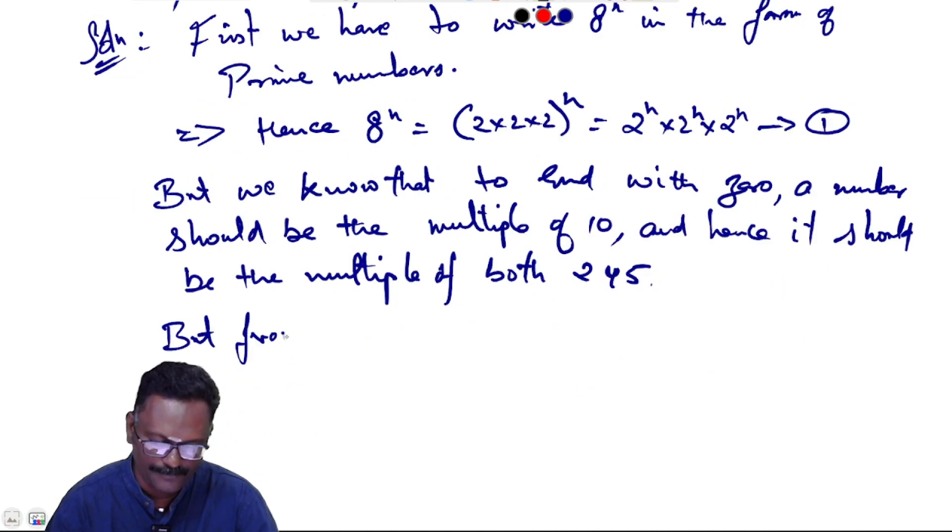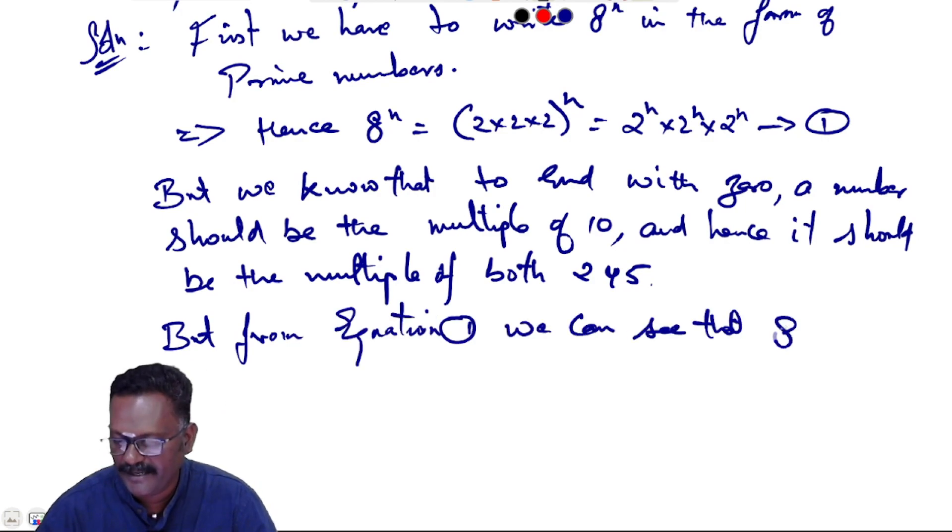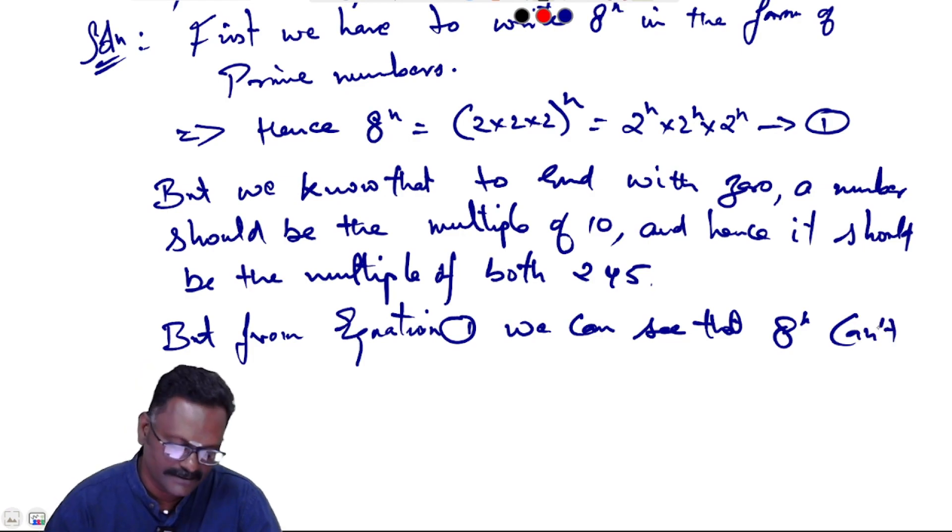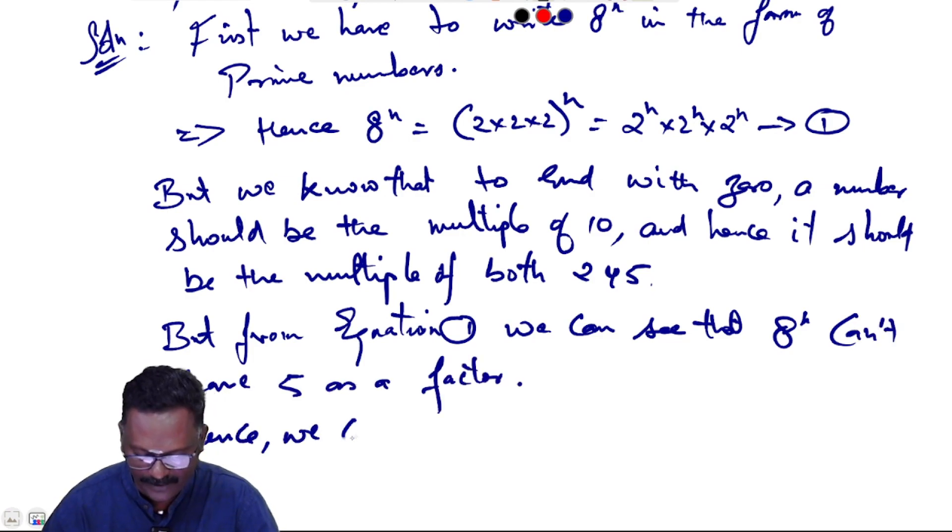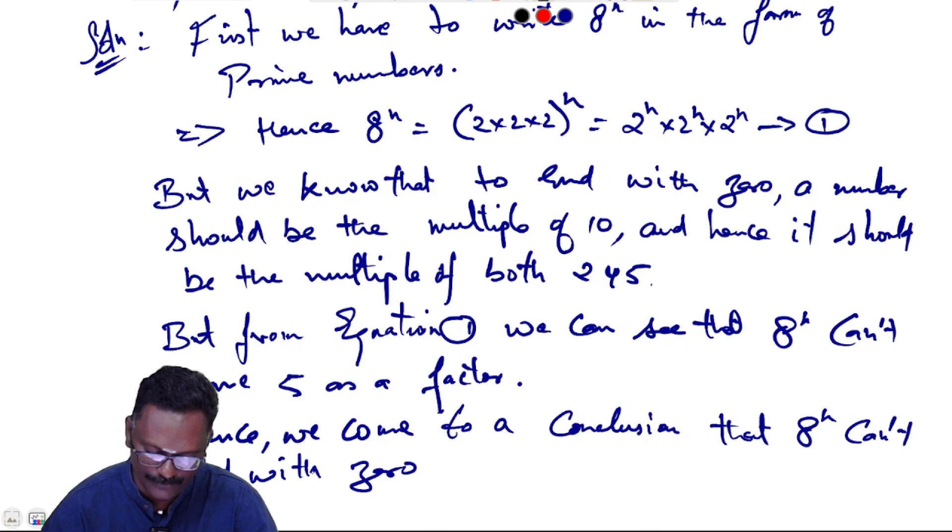But, from equation 1, we can see that 8^n can't have 5 as a factor. Hence, we come to a conclusion that 8^n can't end with 0 when n is a natural number. Thank you.